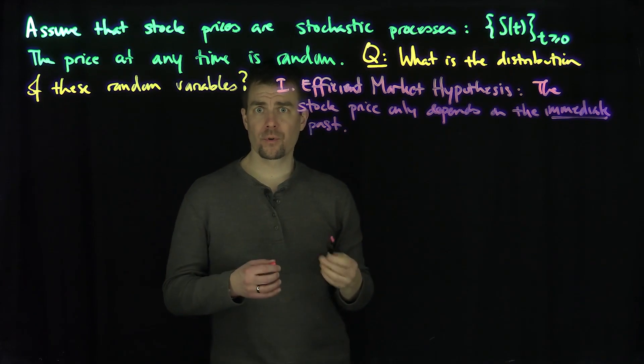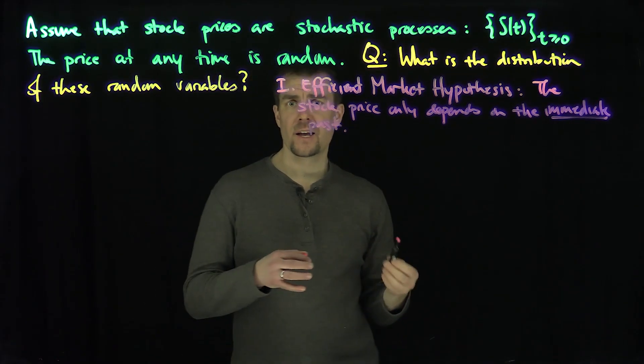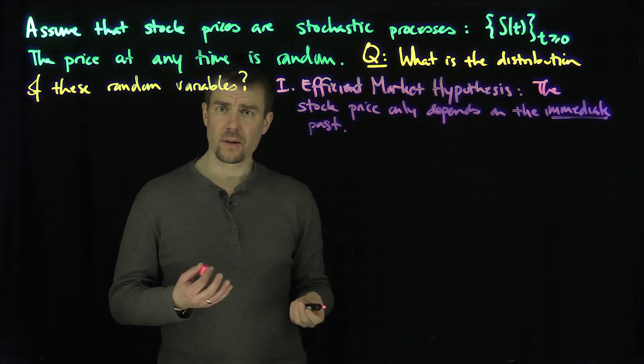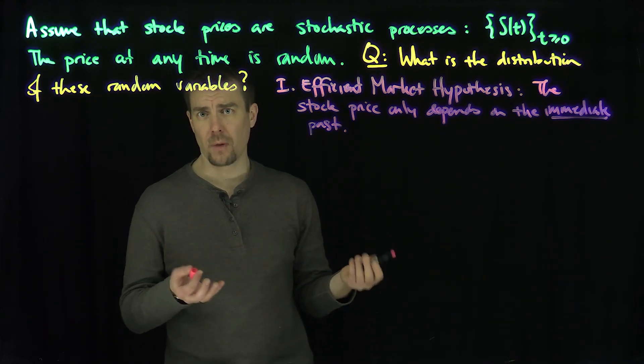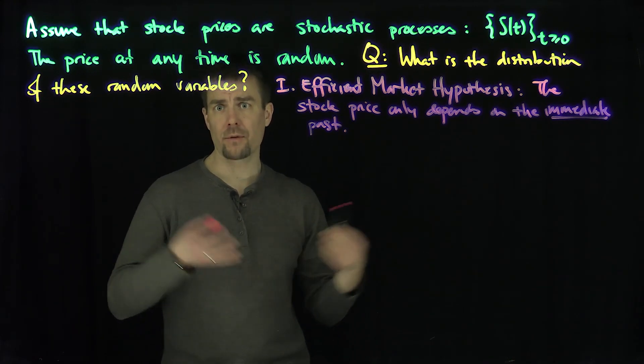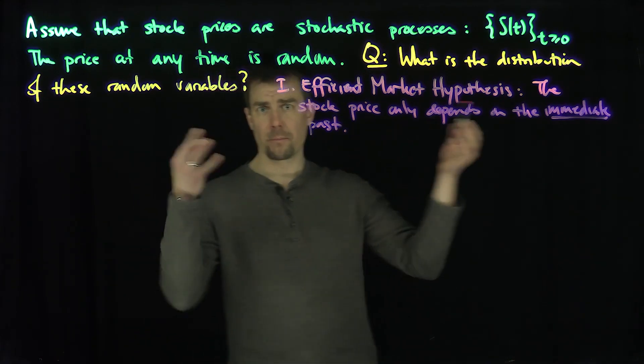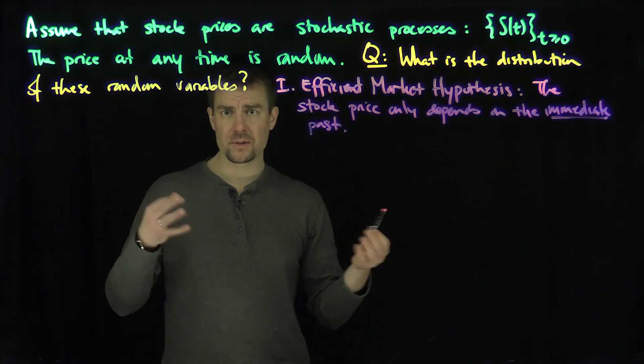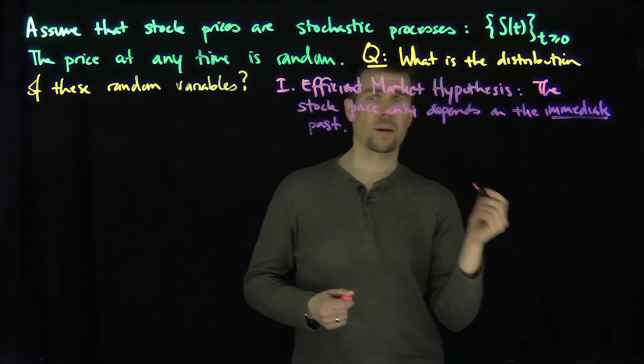No one queries the price of a stock in 1932 to figure out what the stock price is going to do tomorrow. The company might be bankrupt or thriving. We don't know. That's the Efficient Market Hypothesis.